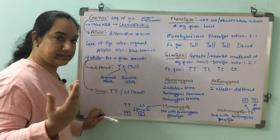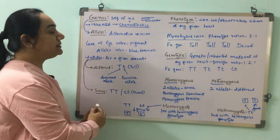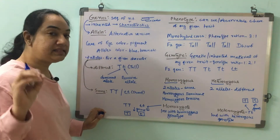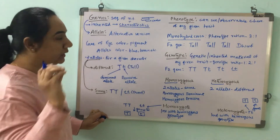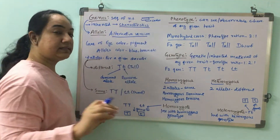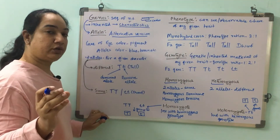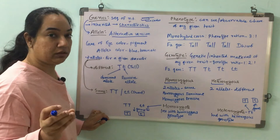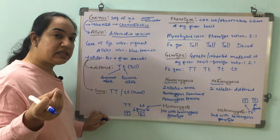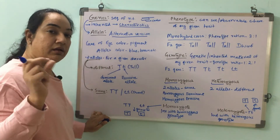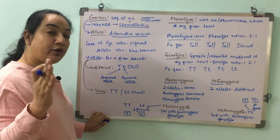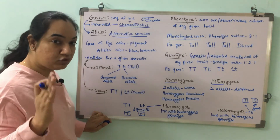What are alleles then? Alleles are nothing but a different version of the same gene. It's an alternative or different version of the same gene. That means there is a slight difference in the sequence that gives me a different allele of the same gene.